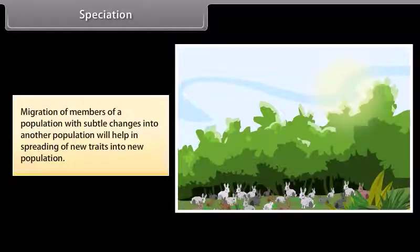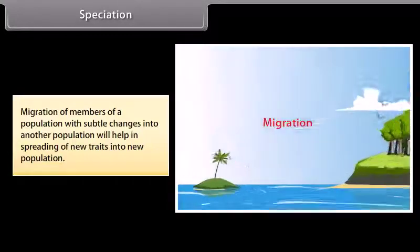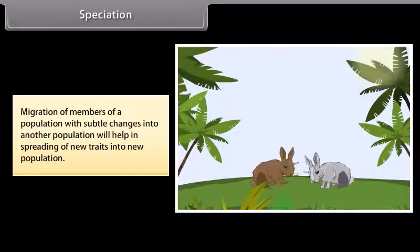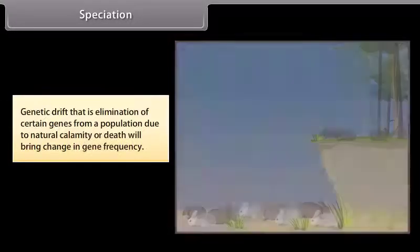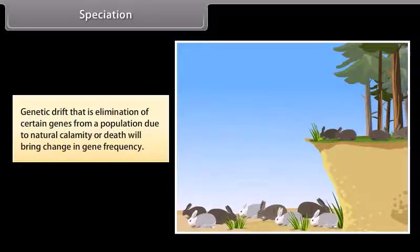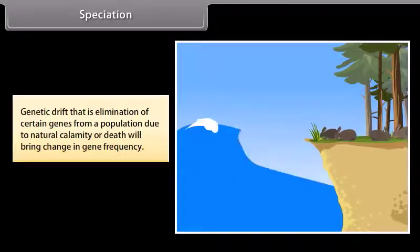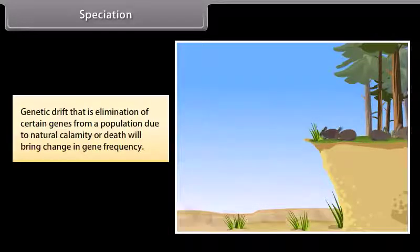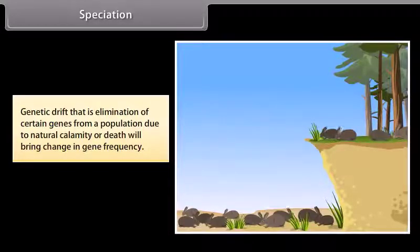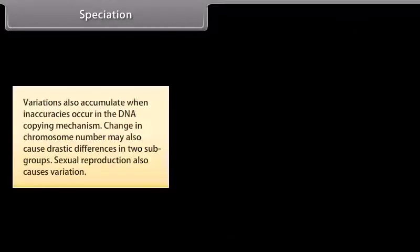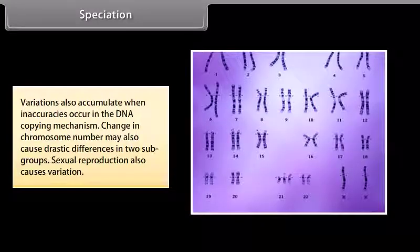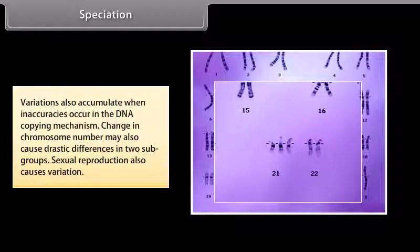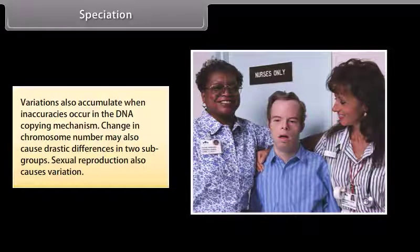Migration of members of a population with subtle changes into another population will help in spreading new traits into new populations. Genetic drift, that is elimination of certain genes from a population due to natural calamity or death, will bring change in gene frequency. Variations also accumulate when inaccuracies occur in the DNA copying mechanism. Change in chromosome number may also cause drastic differences in two subgroups. Sexual reproduction also causes variation.